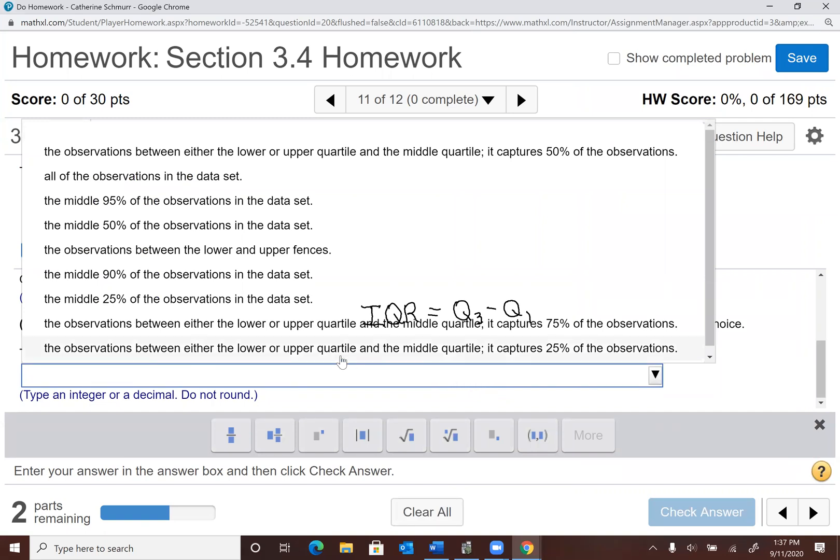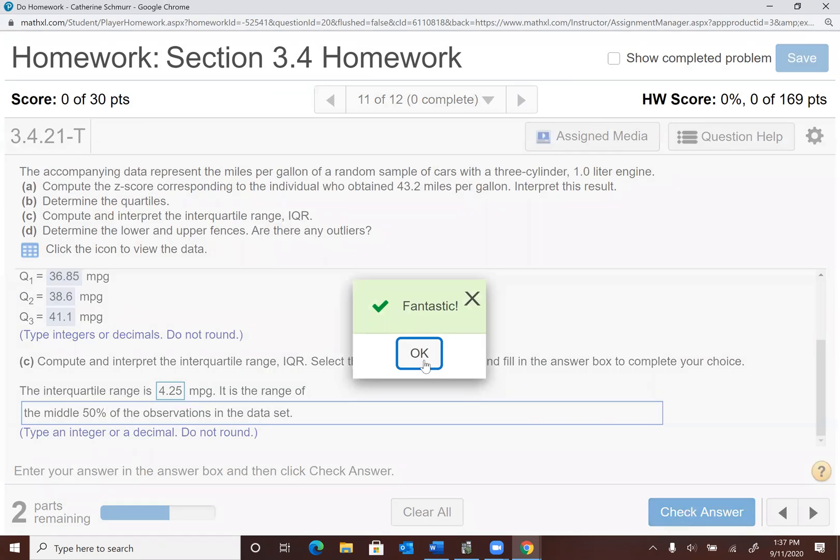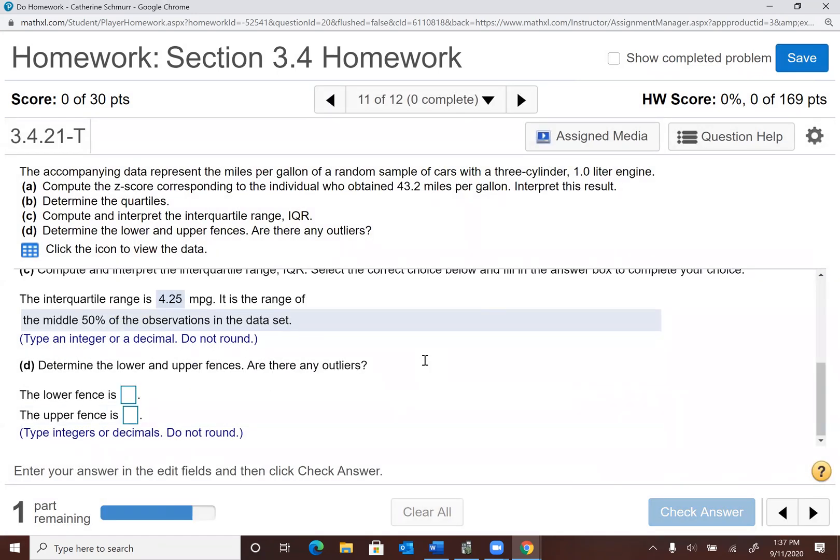Wow, they give us a lot of options here. So the middle 50% of the observations in the data. And that's always going to be true for the interquartile range. It's the middle 50% of the observations.